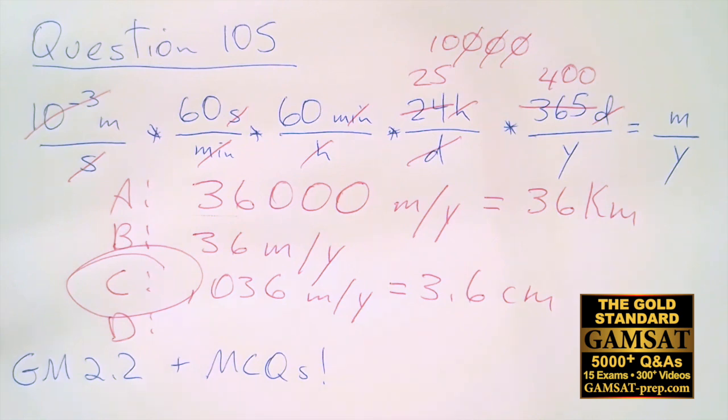And so the question is classic ACER: a little bit of ambiguity, a little bit of reasoning, a little bit of logic, some basic maths, and you're off to the races. So dimensional analysis in GAMSAT Math 2.2 and lots of MCQs.